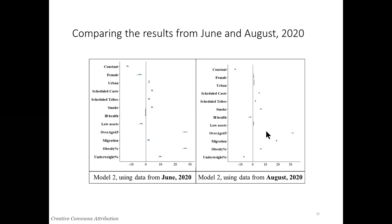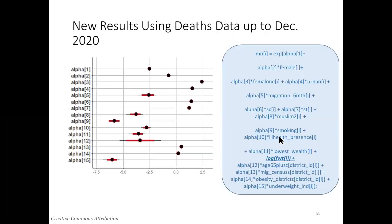Gender, urban, SC, ST, smoking — they feed through into death risk anyway, as does over age 65. So the results are quite firm. This is another picture of the results using data on deaths up to December 2020. They're not very different from the original June results, with district obesity being associated with more deaths in a district. I would suggest that other scholars might look at the Gini coefficient as a measure of inequality, as well as pollution.